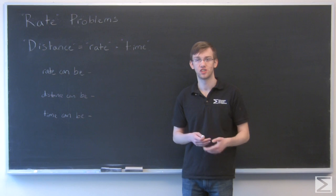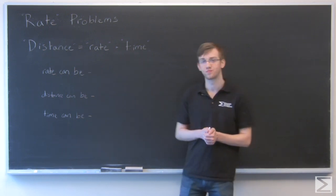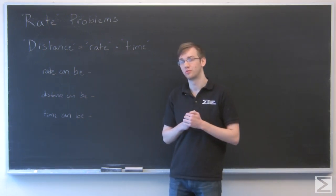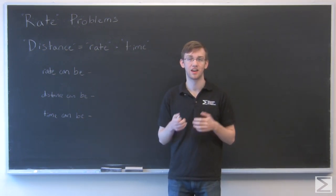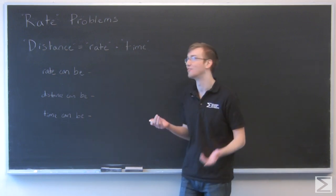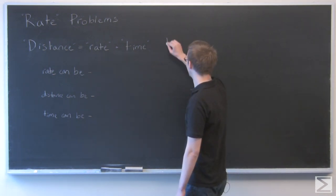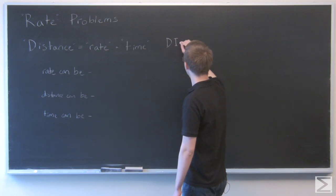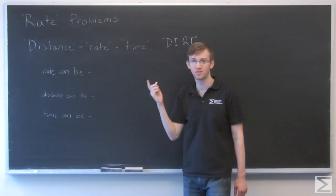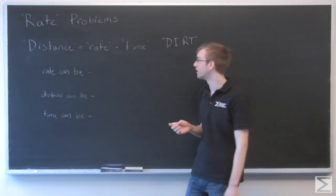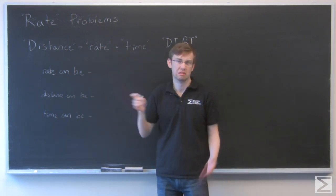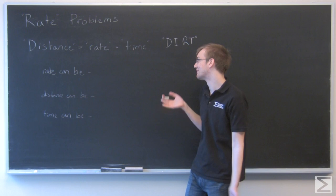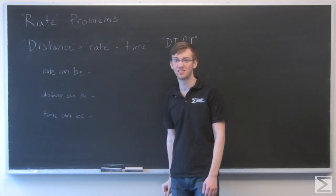Rates describe things changing over time. The most important formula for you to learn is distance equals rate times time. I like to remember this by DIRT because it kind of looks like that, D-I-R-T. This is the relationship you should really be remembering. You can also think of it as rate is distance over time or time is distance over rate, but I think that just gets confusing. So we're going to say distance equals rate times time.